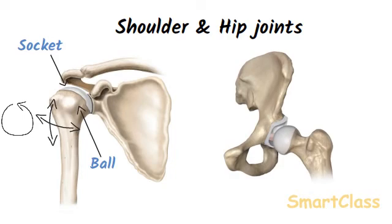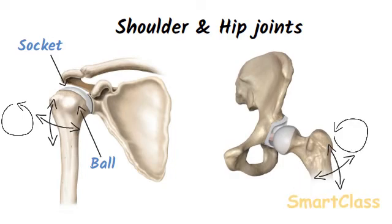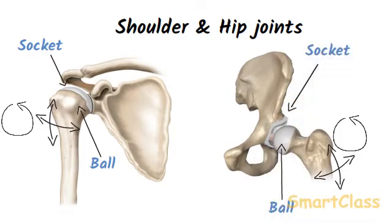If we stand up and move our leg around at the hip, we can move it forwards and backwards, from side to side, and also rotate it — this is because the hip joint is a ball and socket joint. In the hip joint, the upper end of the thigh bone is round like a ball, whereas the hip bone has a socket in it. The ball on the top end of the thigh bone fits into the socket in the hip bone, so the ball and socket joint at the hip allows the leg to be moved in all directions.